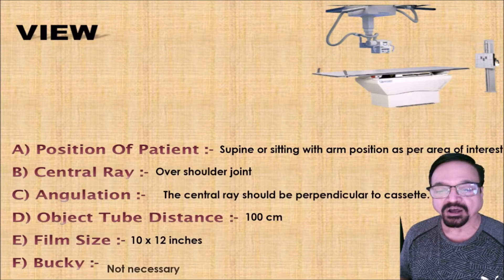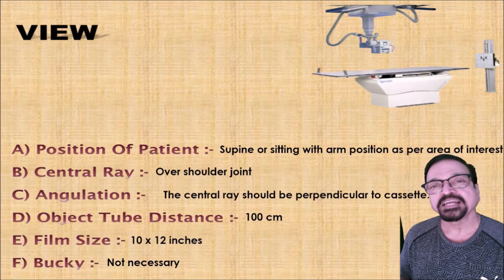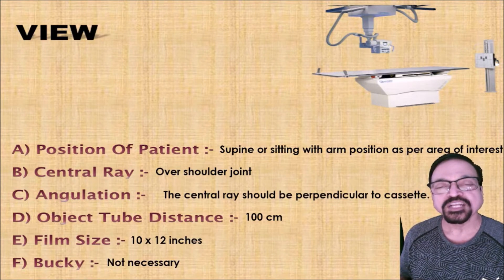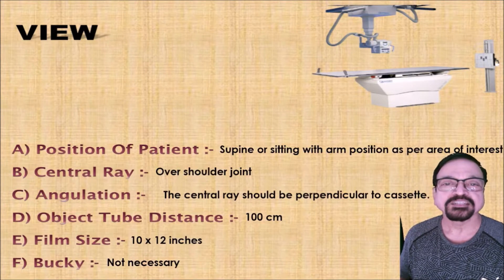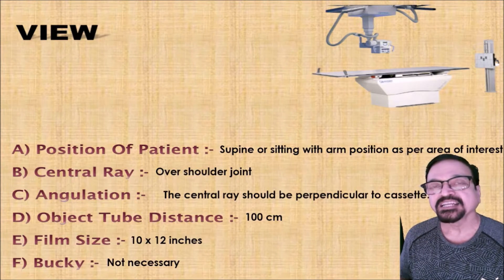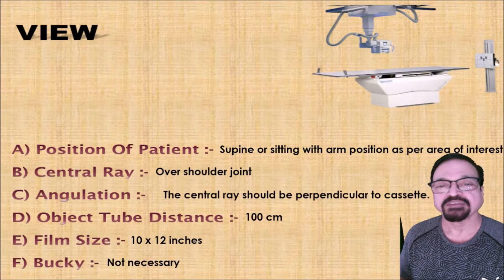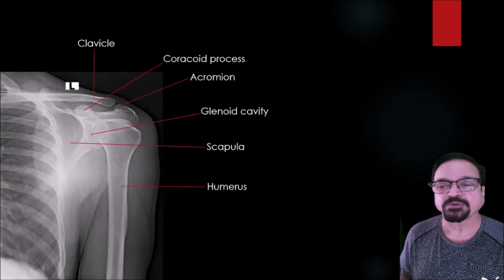A Bucky is optional and most of the time it is not used because the body part being imaged is of less thickness. However, sometimes the shoulder is imaged along with the clavicle and also the lower cervical spine to assess for cervical ribs. In such cases, a Bucky is preferred. Otherwise, for the shoulder joint only, we use a non-Bucky technique. Here are the diagrammatic illustrations about it.